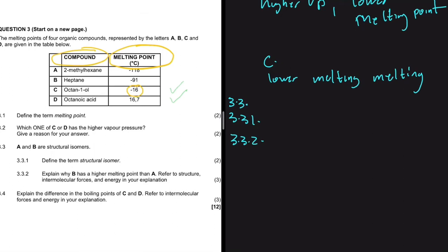A is clearly branched — it says 2-methylhexane, so on the second carbon we have a branch. B just says heptane, so B is a straight alkane. That is the only difference between the two. We are told that B has a higher melting point. If B has a higher melting point, we consequently know it has a lower vapor pressure, because the higher the vapor pressure the lower the melting point.